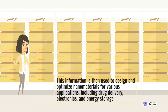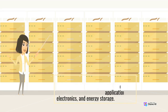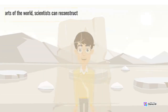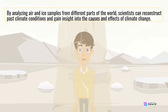This information is then used to design and optimize nanomaterials for various applications, including drug delivery, electronics, and energy storage. In the field of climate science, chemical analysis is used to study the composition of the atmosphere and to monitor changes in greenhouse gas concentrations over time. By analyzing air and ice samples from different parts of the world, scientists can reconstruct past climate conditions and gain insight into the causes and effects of climate change.